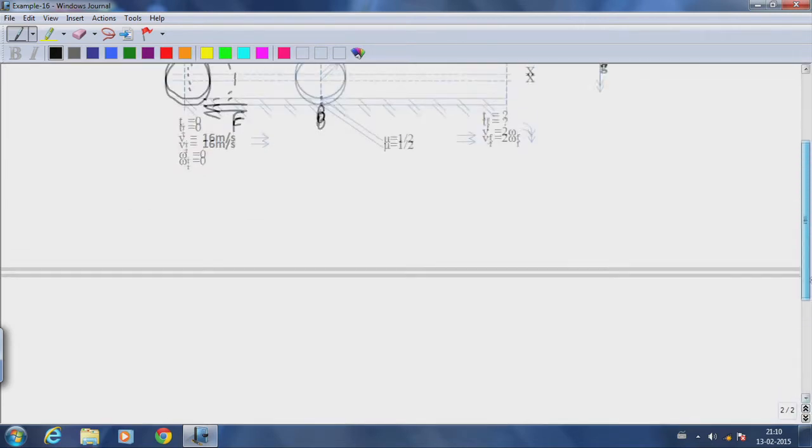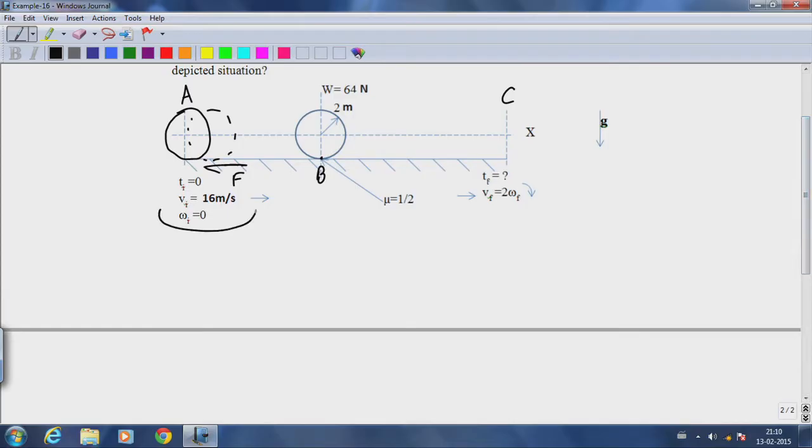We start by looking at this initial condition that v_i is 16 meters per second and omega is zero, which implies it is slipping. So it is in a pure sliding motion.